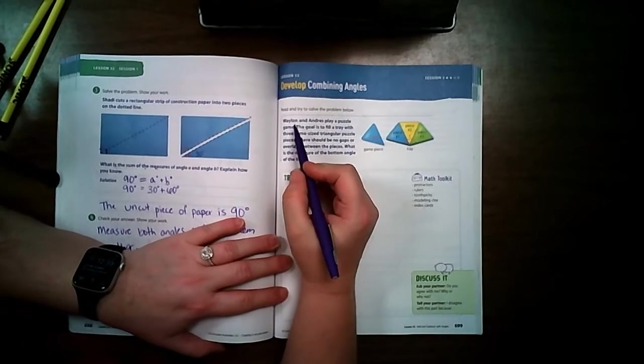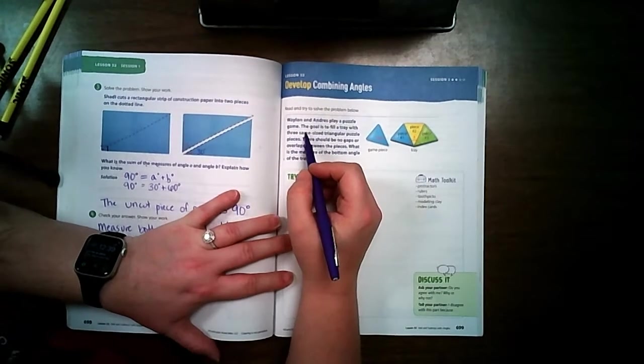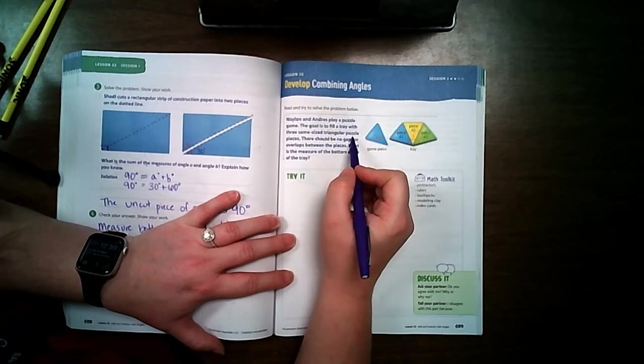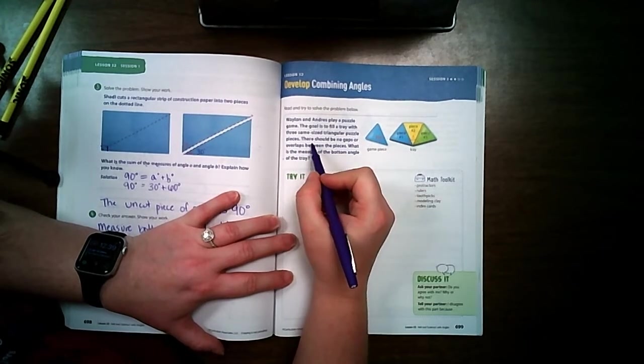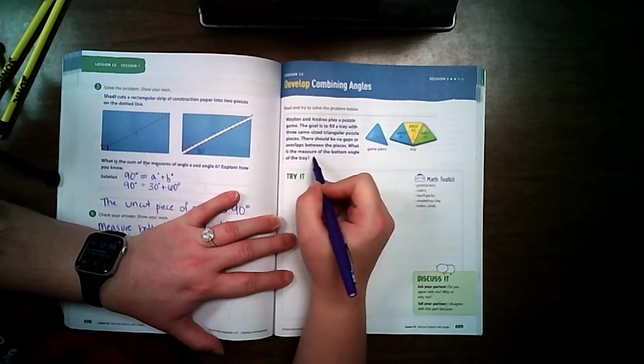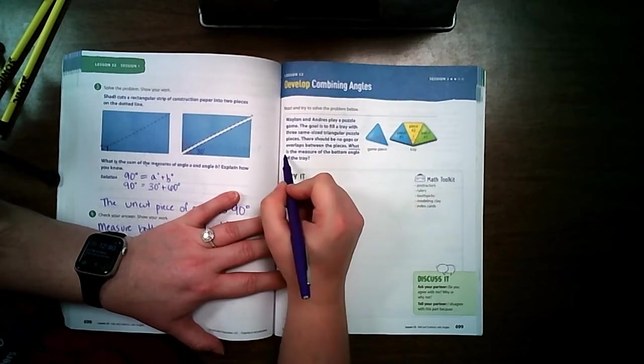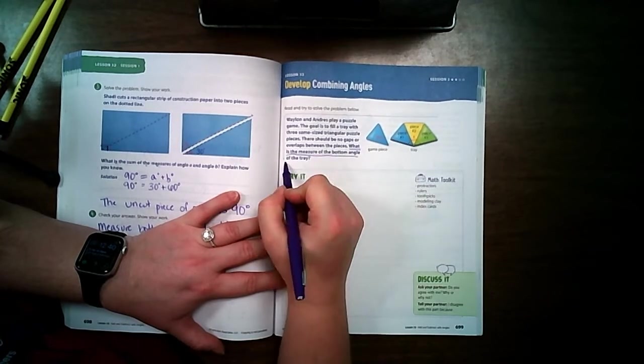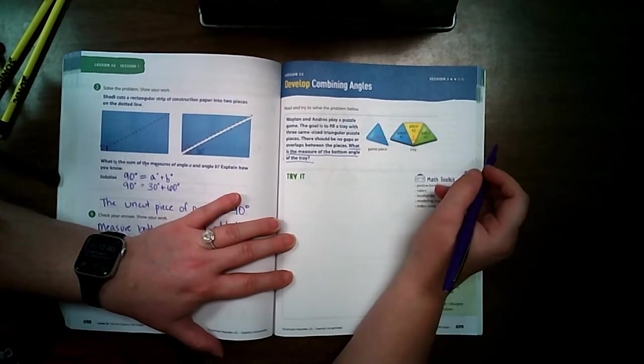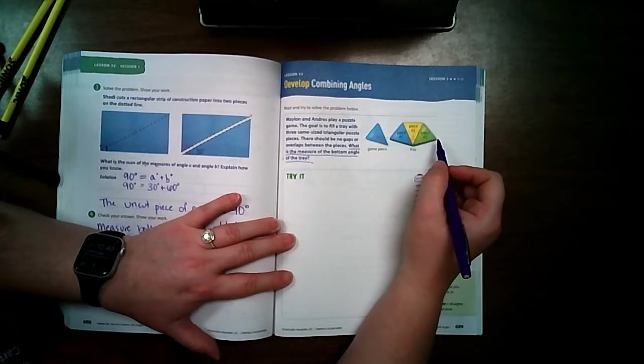Alright, our problem here says: Waylon and Andres play a puzzle game. The goal is to fill a tray with three same-size triangular puzzle pieces. There should be no gaps or overlaps between the pieces. What is the measure of the bottom angle of the tray? So here's our tray and we're trying to fit three pieces in our tray to see how much each measure is worth.